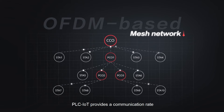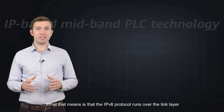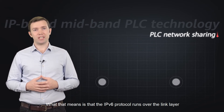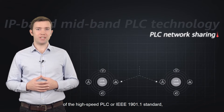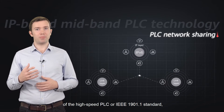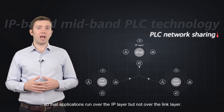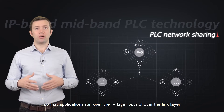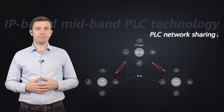PLC IoT provides a communication rate from 100 kbps to 2 Mbps at the application layer. The IPv6 protocol runs over the link layer of the high-speed PLC or IEEE 1901.1 standard, so the applications run over the IP layer but not over the link layer.